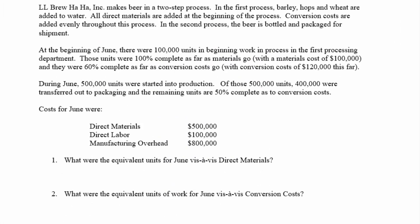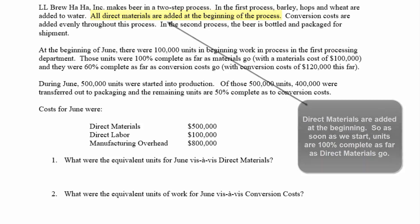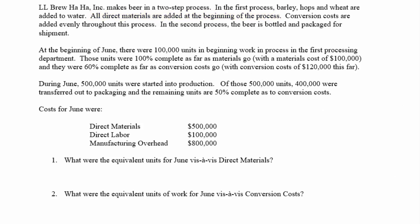LL Bruhaha makes beer in a two-step process. We're going to be in the first process, where barley, hops, and wheat are added to water. All the direct materials get added at the beginning of the process, so as soon as we start on something it's complete as far as materials go. Conversion costs are added evenly throughout the process. Then we move the stuff on to the second process where beer is bottled and packaged.